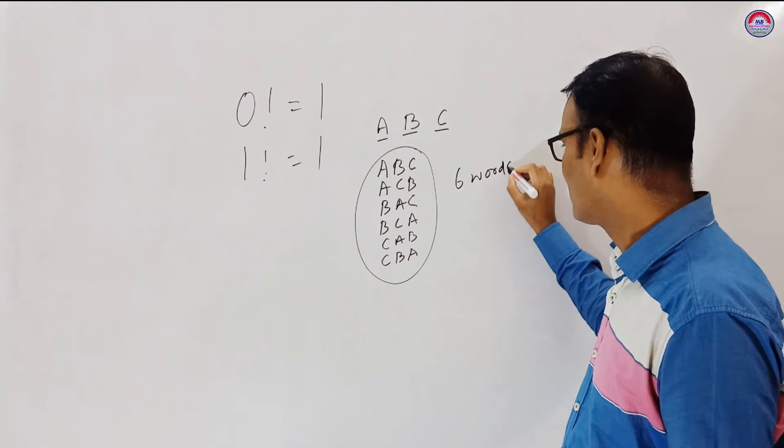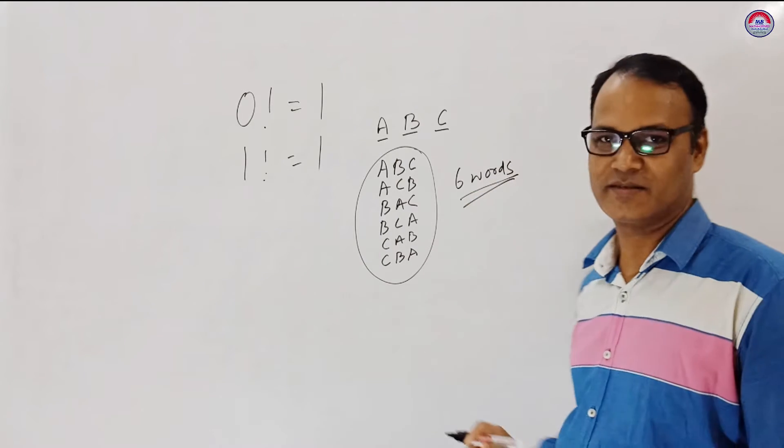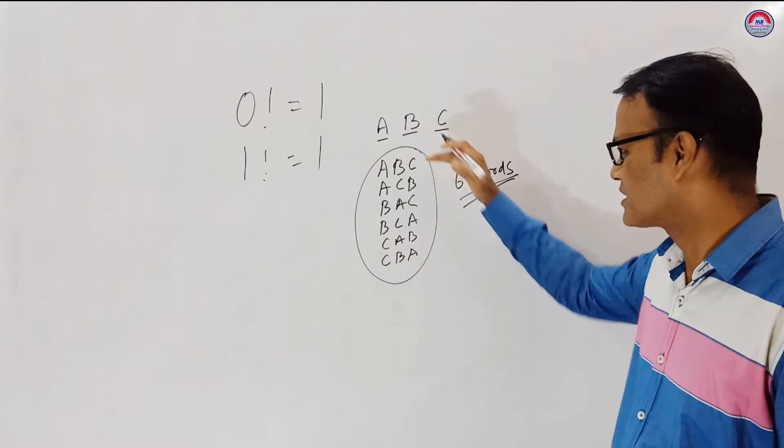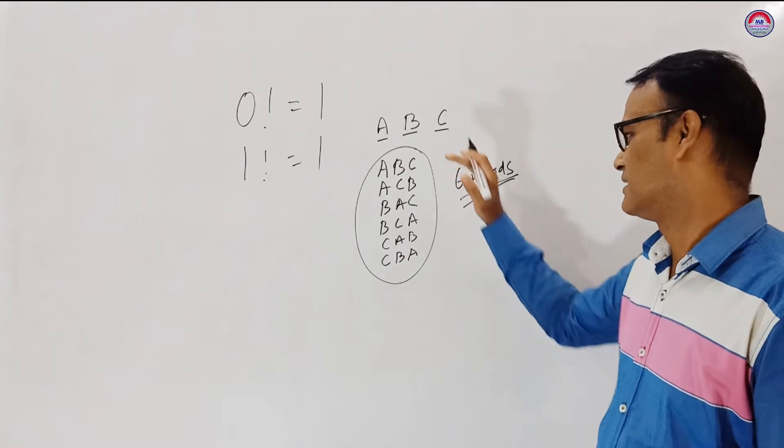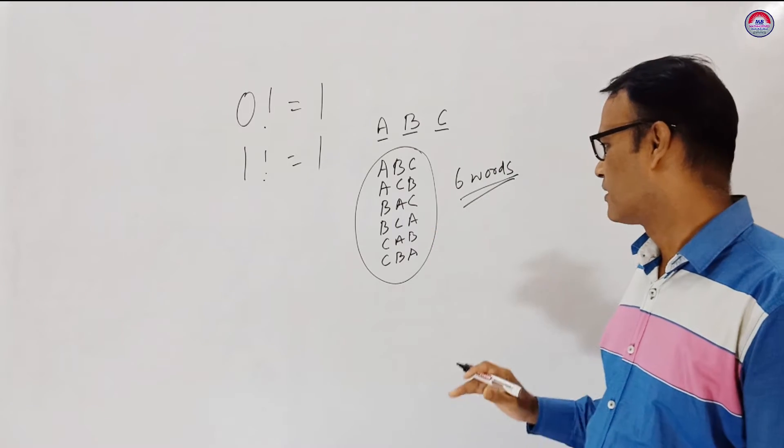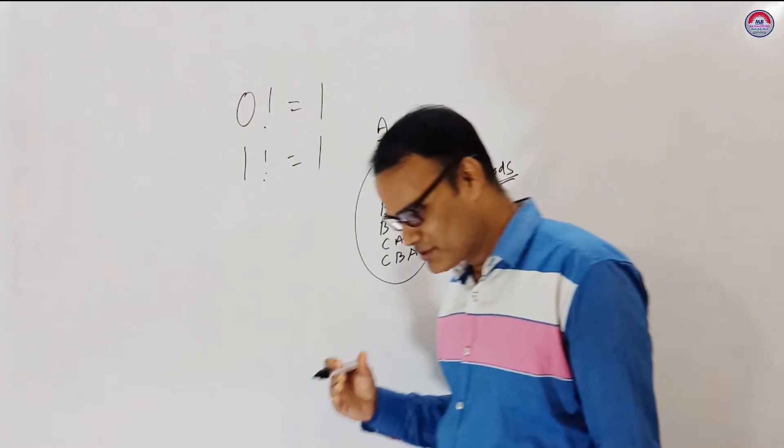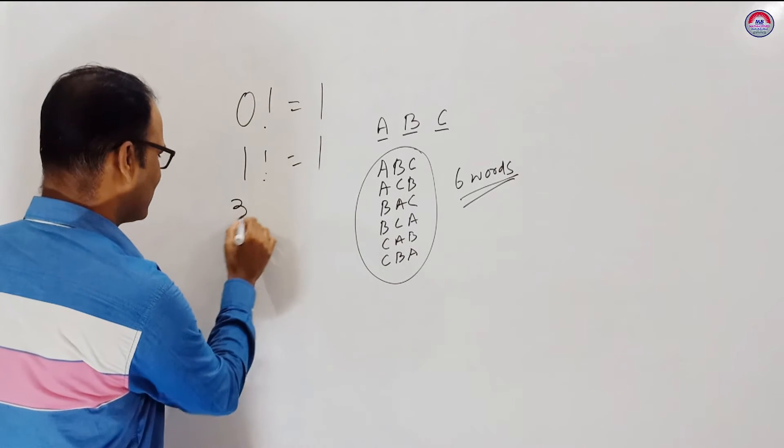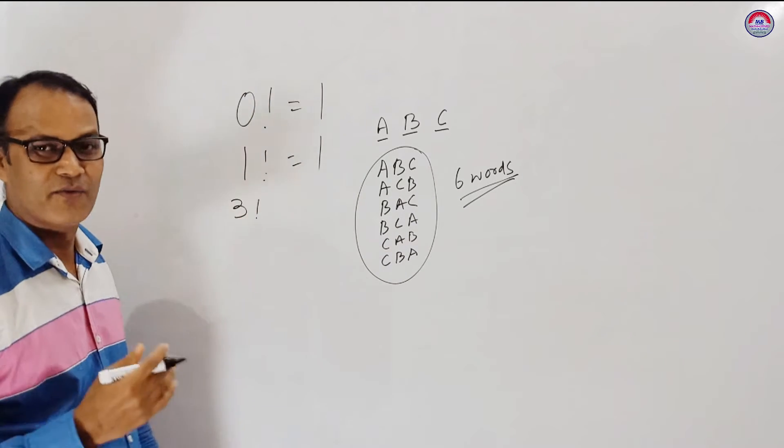Words without meaning. So this six words is the maximum number of words you can write. So for this we use factorial.